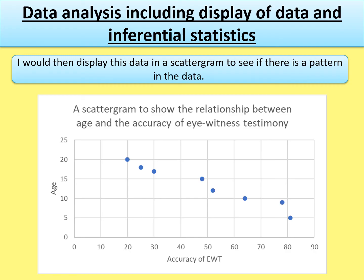You would then display this data in a scattergram to see if there is a pattern. Correlations use scattergrams as the display method. In the exam, just sketch it — it doesn't have to be perfect. Label the co-variables on the axes, add a title, and plot scatter points showing a negative correlation. If the investigation predicted a positive correlation, you would show dots indicating a positive trend instead.